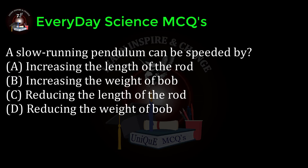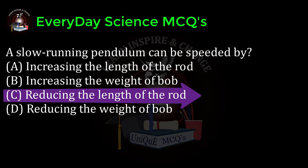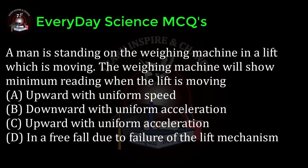A slow running pendulum can be speeded up by: a) increasing the length of the rod, b) increasing the weight of the bob, c) reducing the length of the rod, d) reducing the weight of the bob. Correct answer: c.